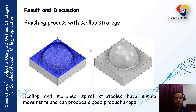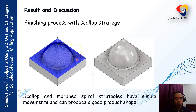We now proceed to each finishing strategy. This is the Scallop strategy simulation. We can see that the blue color is constant. In the Scallop strategy, there is simple movement that can produce a good product shape. We can observe the consistent toolpath movement, which looks very nice in this scallop result.